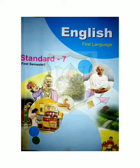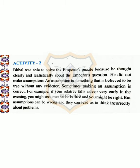Welcome back dear children to e-learning classes, Standard 7, subject English, Chapter number 2: Exploring Puzzles. Activity 2 — people were able to solve the emperor's puzzle because he thought clearly and realistically about the emperor's question. He did not make assumptions.